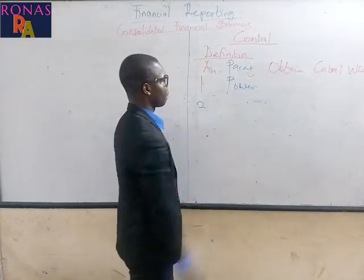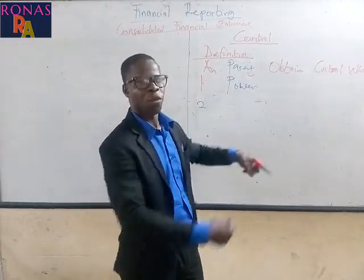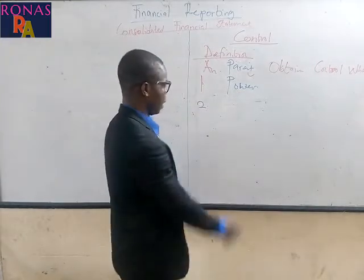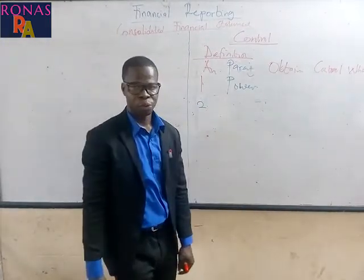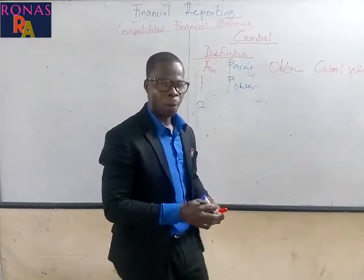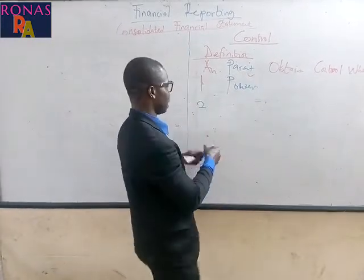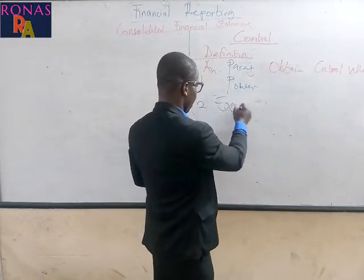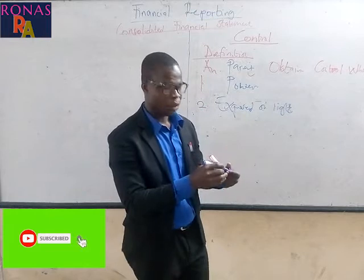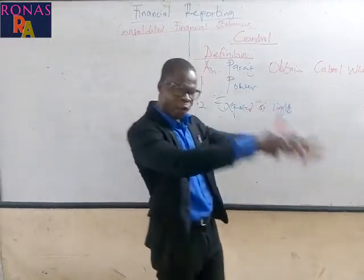The second condition has to do with the parent being exposed to, or having the right to, the variable returns from its involvement with the investee or the subsidiary. So remember, we are saying that the parent is exposed to or has the right to the variable returns from their involvement with the subsidiary.